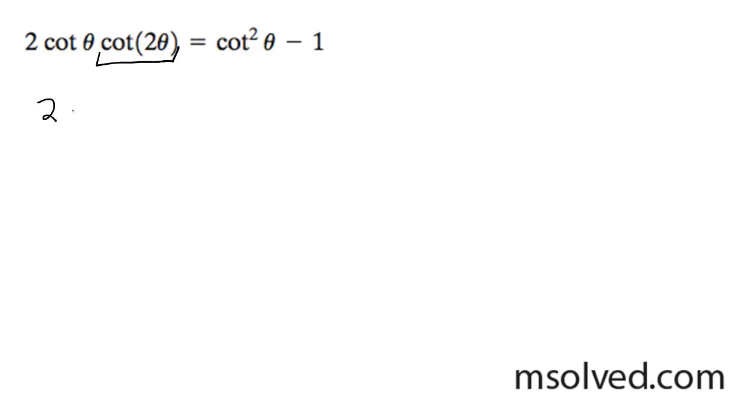So what's going to happen here is we're going to have two, and then the cotangent is the cosine theta over the sine theta times the cotangent. The double angle of cotangent can be rewritten as cosine of two theta over sine two theta.